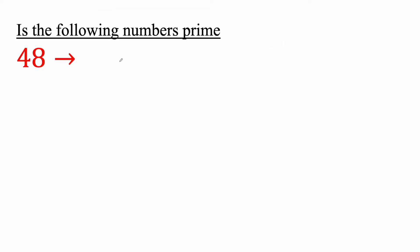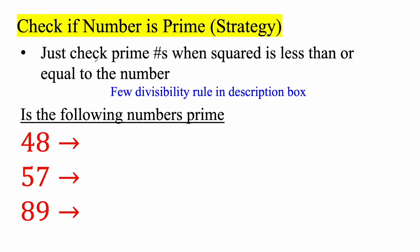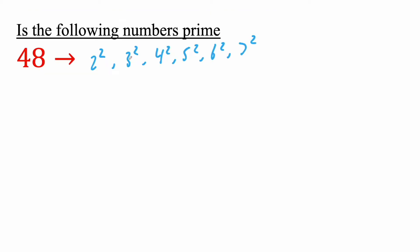So what I'm going to do is I'm going to start with 2. 2 squared, then I'm going to go 3 squared, 4 squared, 5 squared, 6 squared, 7 squared. But the rule says just check prime numbers when squared. 2 is prime, 3 is prime, but 4 is not prime. 5 is prime, 6 is not prime. And I'll explain why we have to do this. And 2 squared gives you 4, 3 squared is 9, 5 squared is 25, and 7 squared is 49.